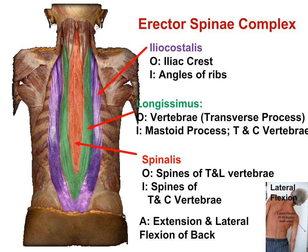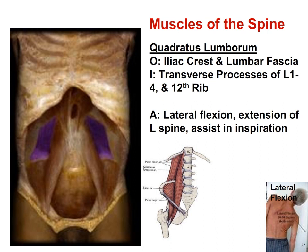Another muscle that helps erect and laterally flex the spine is the quadratus lumborum. It originates on the iliac crest and lumbar fascia, and inserts on the transverse processes of L1 to L4 and also the twelfth rib. Its function is lateral flexion and extension of the lumbar spine, and it has a minor function in assisting with forced inspiration.